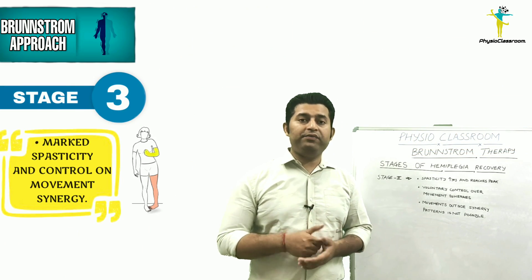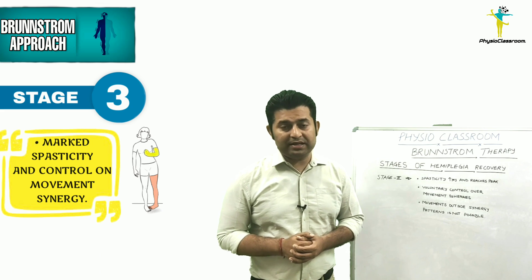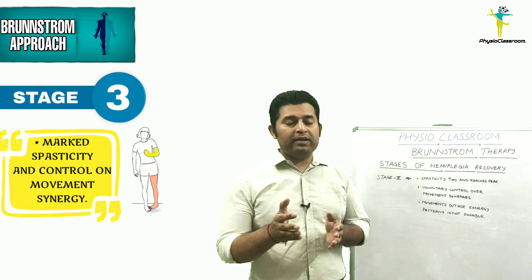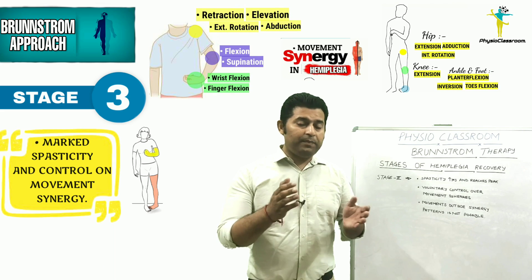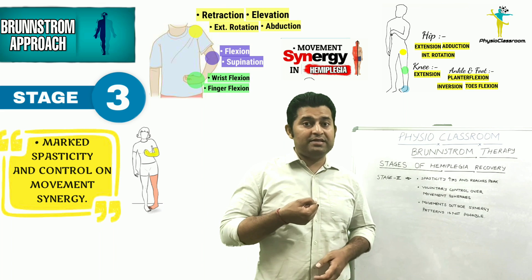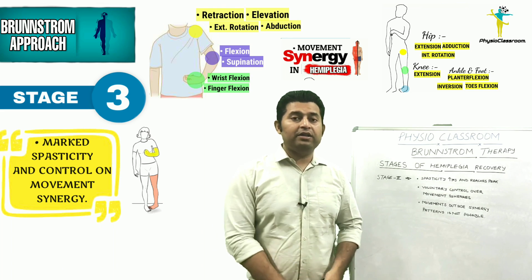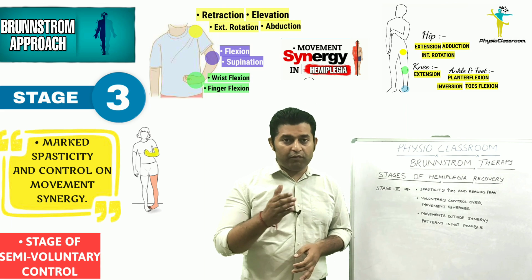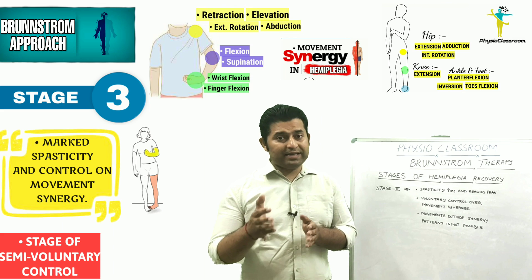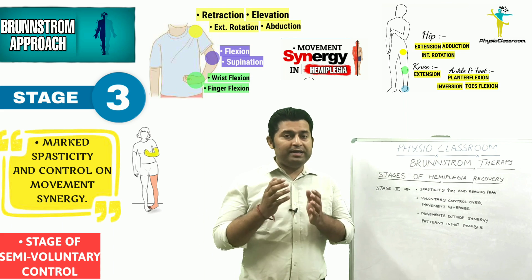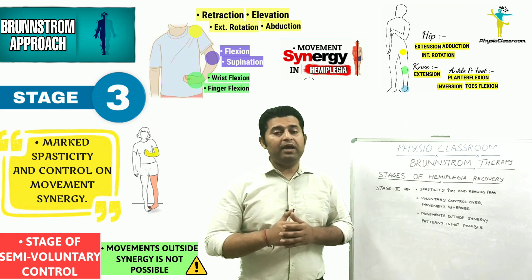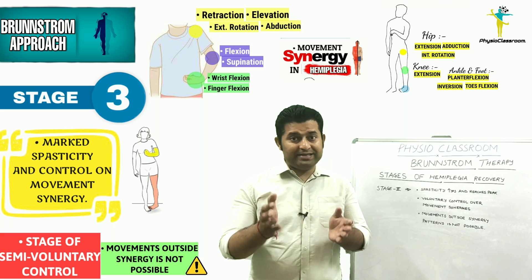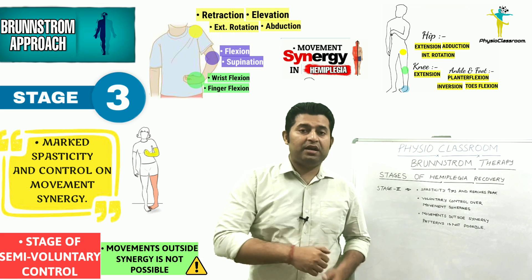Brunström Stage 3 is characterized by further increase in spasticity levels, with spasticity reaching its peak. At this stage, the hemiplegic patient gains voluntary control over the basic limb synergy movements — the patient can now initiate and perform the basic limb synergies, but may not complete the full range of motion. Brunström considers Stage 3 as the stage of semi-voluntary control: the patient can initiate the synergy but has no control over the outcome, which is always the flexion or extension synergy movement.